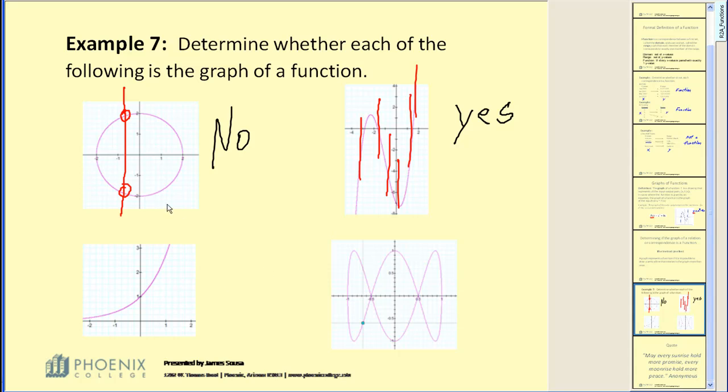The next graph, if I start drawing vertical lines, I can see it is impossible to draw a vertical line that crosses this graph more than once. Therefore, it passes and it is a function.